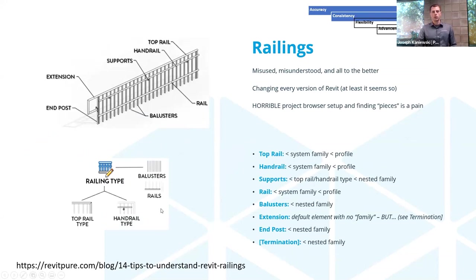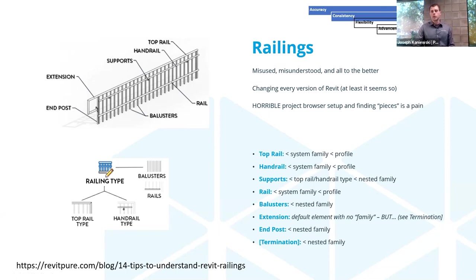Revit Pure is a great place to look for information on Revit. This diagram is pulled from them, showing railing components and how Revit creates them. Railings are often misused, misunderstood, or not utilized to their full potential. They do seem to be improving every version of Revit. I hate — and I try not to use that word — the project browser setup for railings, which nests things in weird places, but I can't control that.